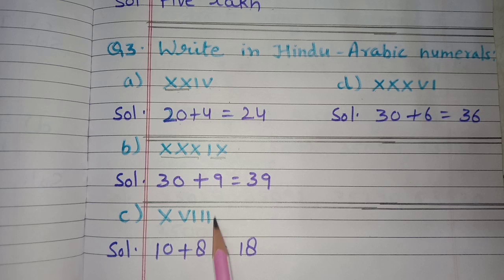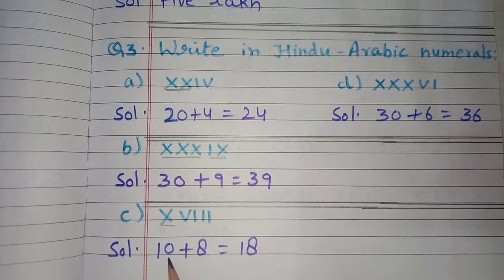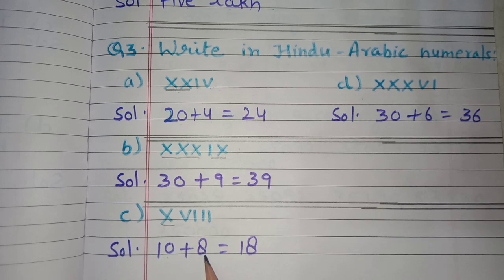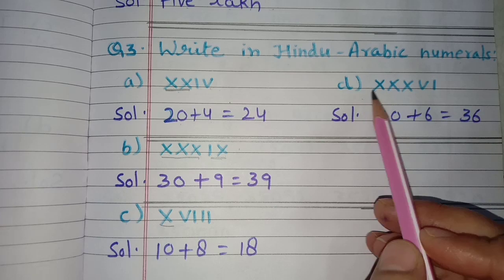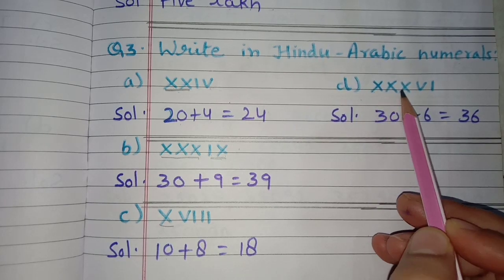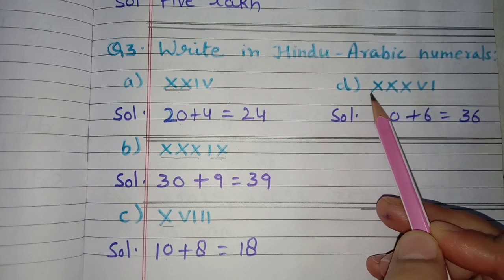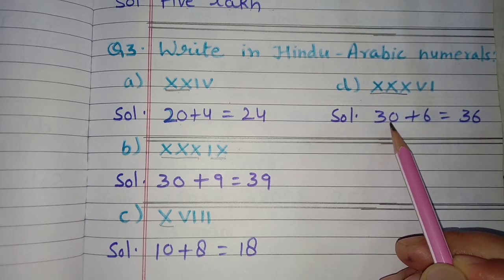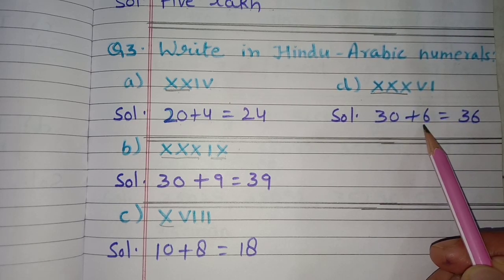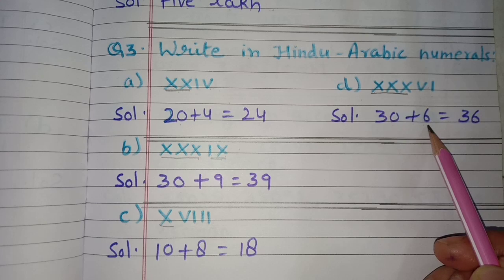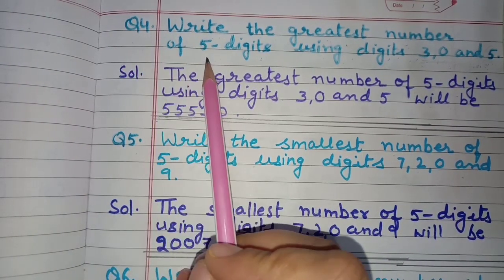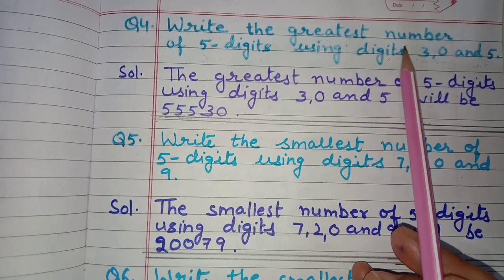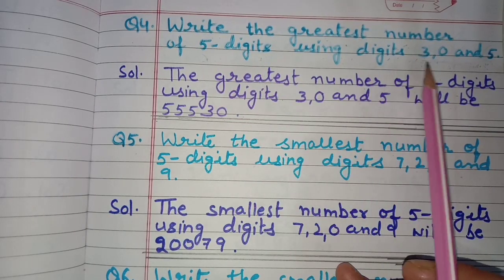Part C is XXVIII: X means 10 and VIII means 8, so 10 plus 8 is 18. Part D is XXXVI: three times X means 30 and VI stands for 6, so 30 plus 6 equals 36.